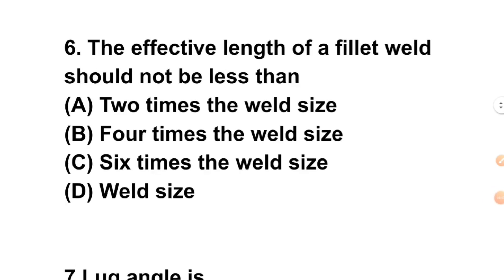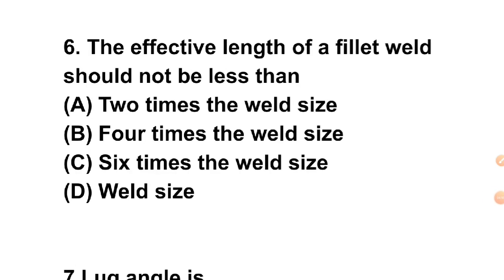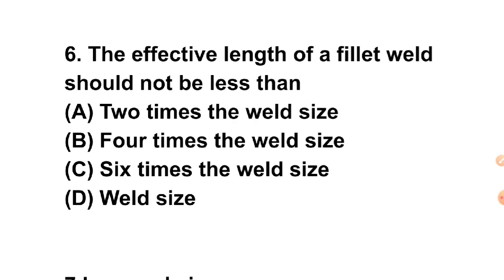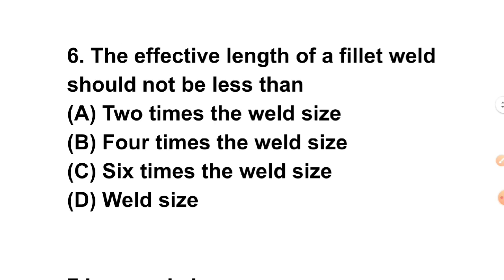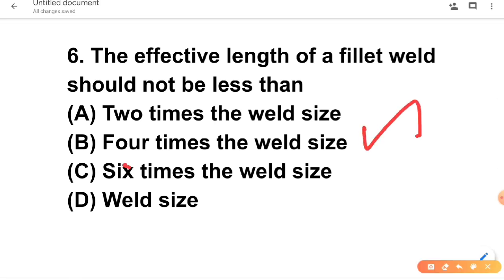Question 6: Effective length of fillet weld should not be less than — A) 2 times weld size, B) 4 times weld size, C) 6 times weld size, D) weld size. The effective length of fillet weld should not be less than 4 times the weld size. The answer is B.